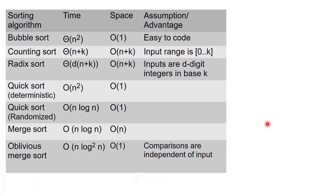Here is a table with the sorting algorithms which we have seen. We have started with bubble sort. Bubble sort runs in time O(n²), quadratic time in the number of elements. However, it can do so using just constant space, and another advantage is that it's very easy to code. If you want to sort a very small number of elements like 100, bubble sort is a good choice.